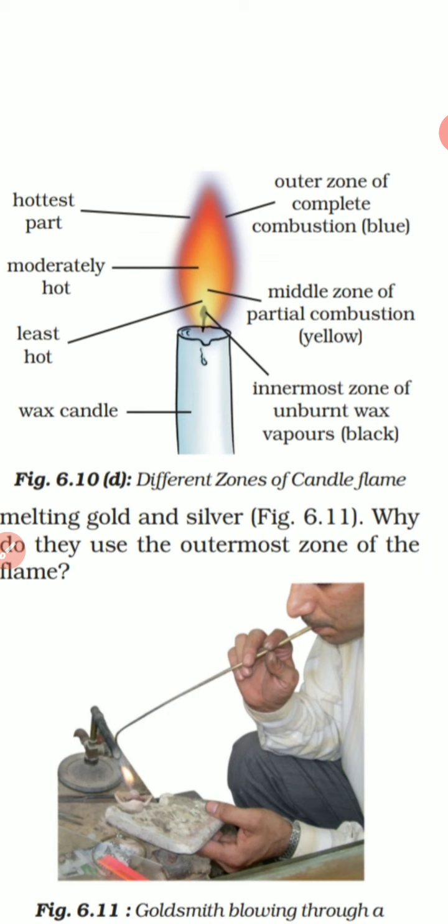A long answer question can be asked: explain the structure of flame with a diagram. You have to draw this diagram and mention the layers, the types of combustion, and the heat of each zone, explaining it step by step.